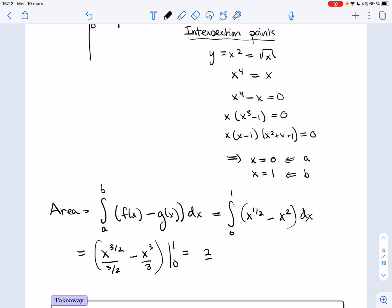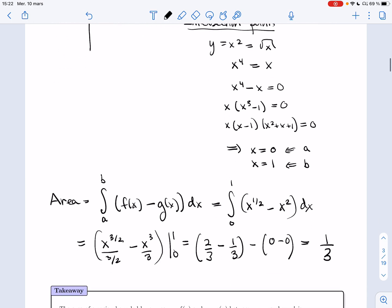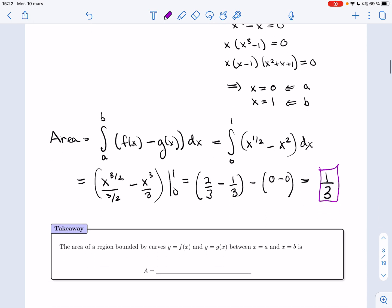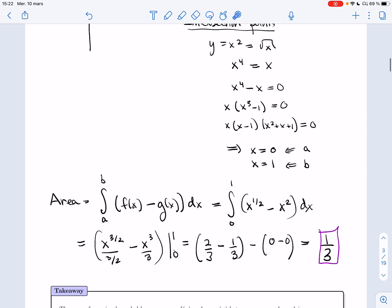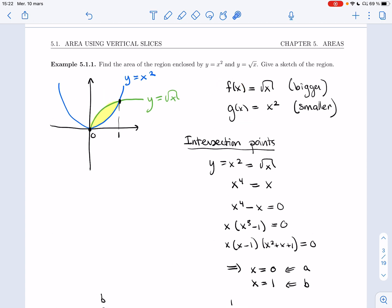So I get x to the three halves over three halves minus x cubed over three from zero to one. So that's two thirds minus one thirds. When I plug in one, when I plug in zero, I get zero minus zero. So this region is area one third. Good. Alright. So we have the area. And so here's how I will phrase it. The area of a region bounded by the curve y equals f of x and y equals g of x between x equals a and x equals b.